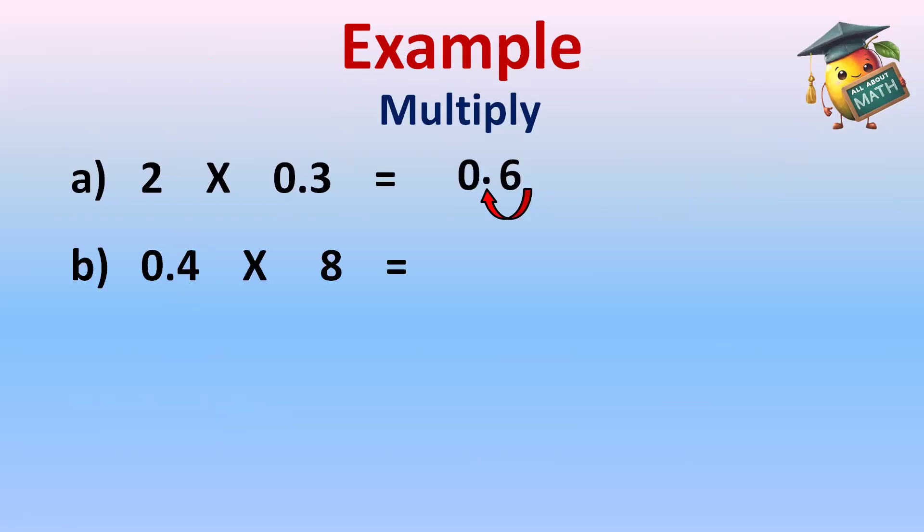Part b: 0.4 multiply 8. Remove the decimal. Multiply 4 with 8. 4 eights are 32. Count the decimal places: only 1. So decimal in answer will come after one digit. So it's 3.2.